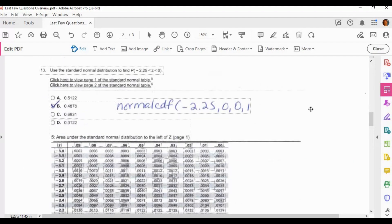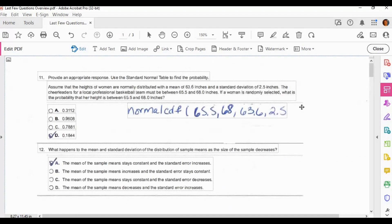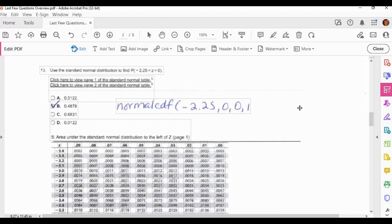Now let's look at 13. 13 is another one where we can use the normal CDF formula. It says use the standard normal distribution to find the probability of Z being between negative 2.25 and 0. So this is one where you're going to do a between. And because it said standard normal distribution for this case, because it did not give us a mean and a standard deviation like this one did, we are going to use 0 and 1. So we use the lower bound like it has here. The lower bound is the negative 2.25 and the upper bound is 0. And then we use 0 and 1 for our mean and standard deviation. And then the answer that we get is B, 0.4878.